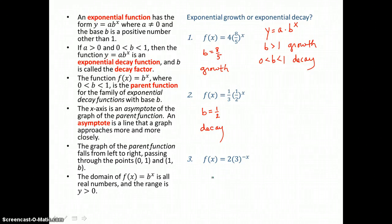And now in the third problem, you might look at this equation and think that the base is 3, the b value is 3, and expect this to represent exponential growth. But really, we have to get rid of that negative exponent. And to do that, we'd have to invert 3, write its reciprocal 1 third, and make the exponent positive x.